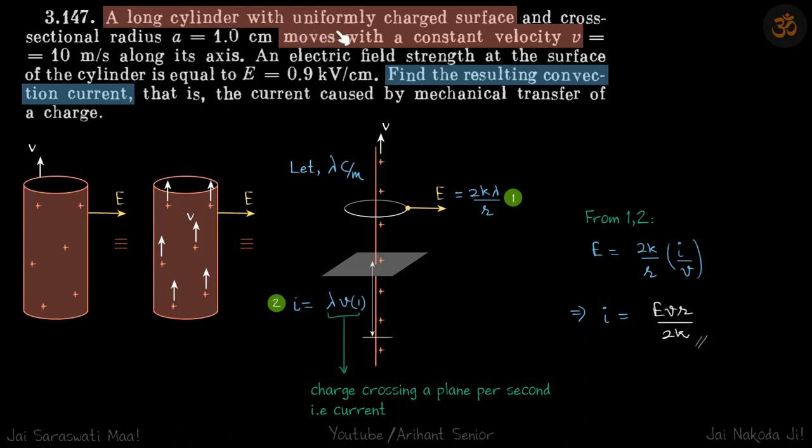We are given a long cylinder with a uniformly charged surface and it's moving with a velocity V. They have also given that on the surface the electric field due to these charges is E and we need to find what is the convection current.